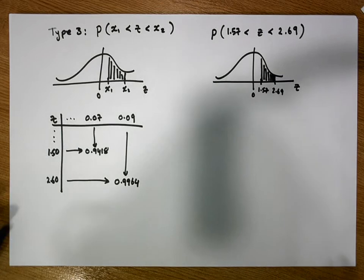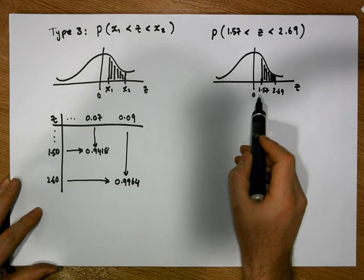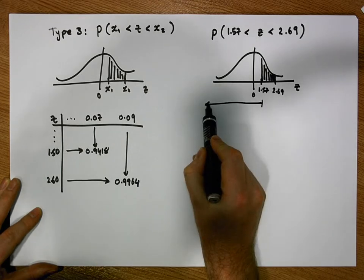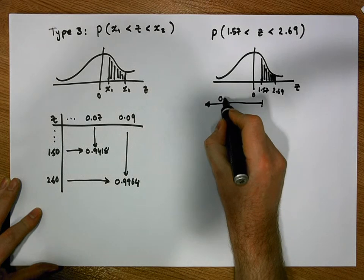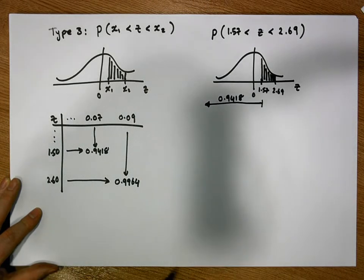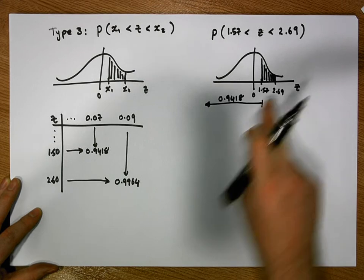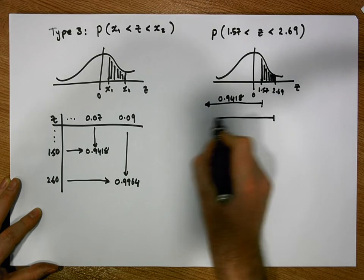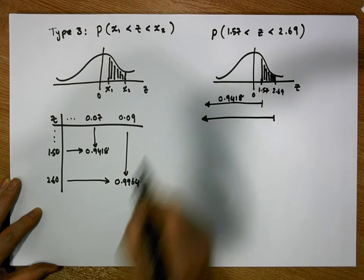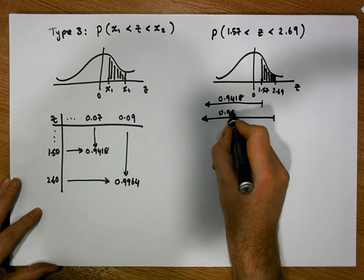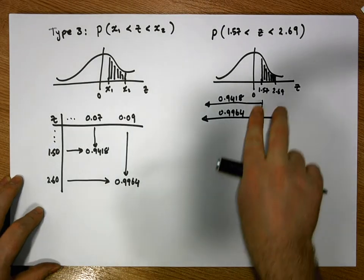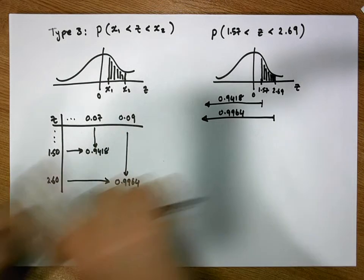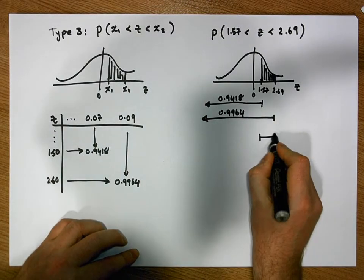So what do these values represent? When we look up 1.57 on our tables, we get 0.9418, meaning the area from 1.57 down to negative infinity under the curve is 0.9418. When we look up 2.69, we get 0.9964, meaning the area from 2.69 down to negative infinity is 0.9964. We are interested in the area between those two points — if you take the shorter line away from the longer line, we are left with the area between them.